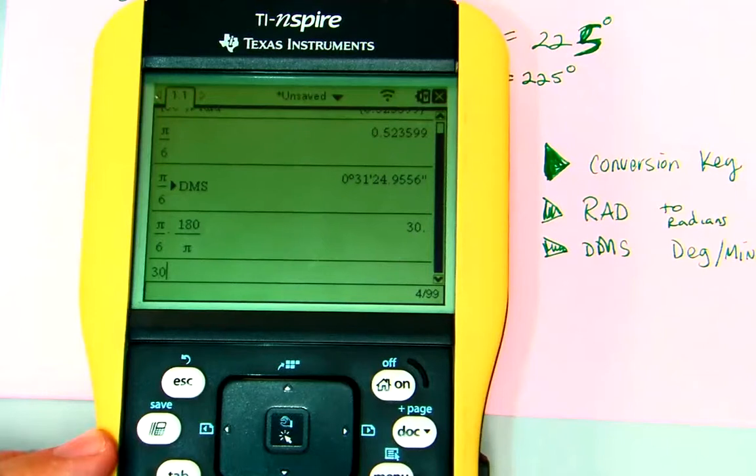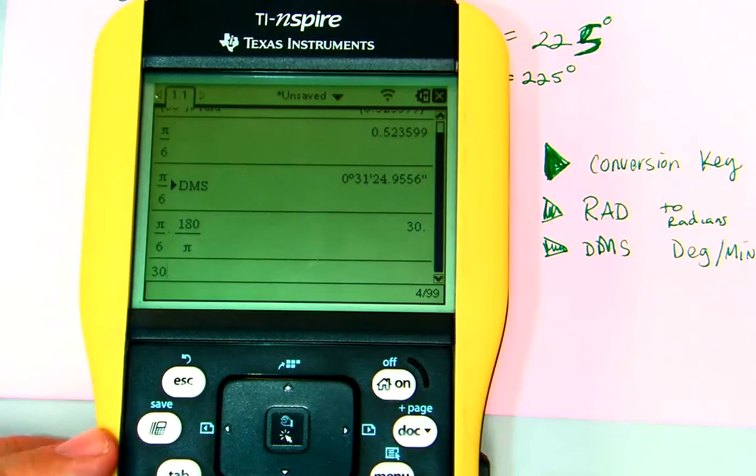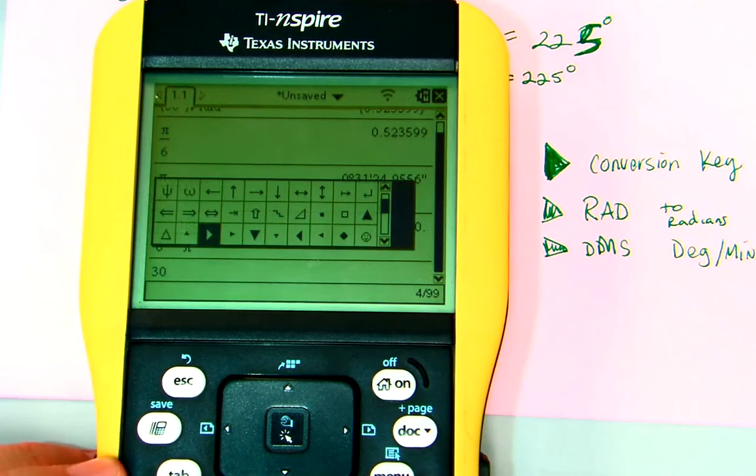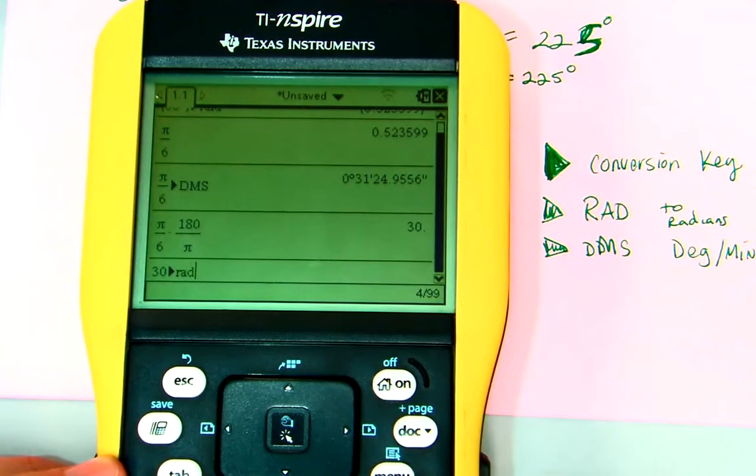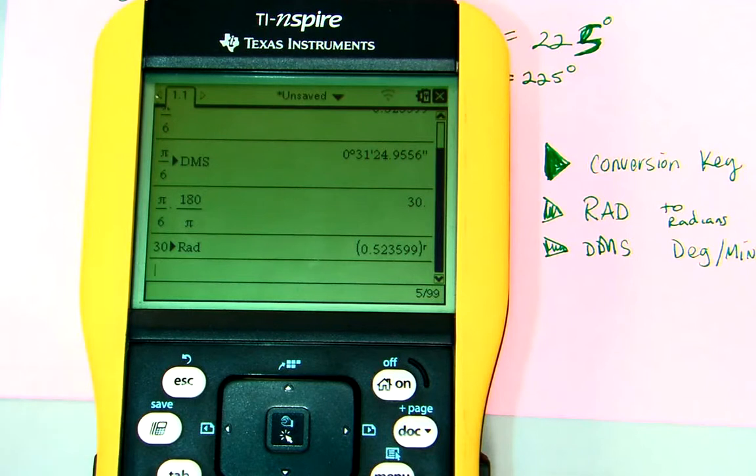Now, if we have 30 degrees. And, we want to convert this to radians. That's when we hit control. That. Hit this. And, hit rad. And, we get radians.